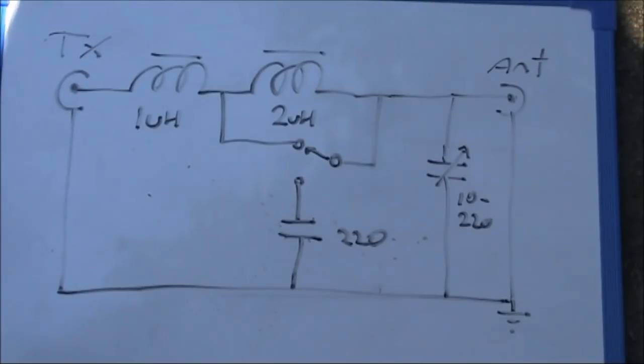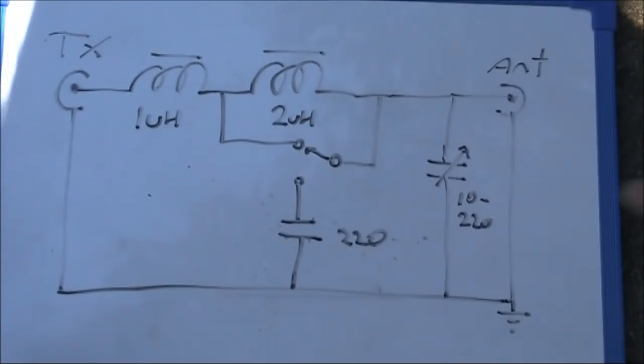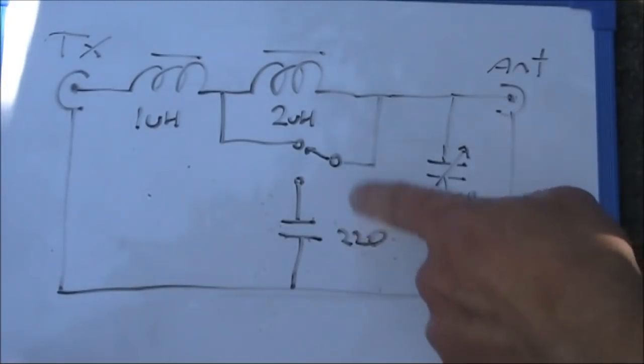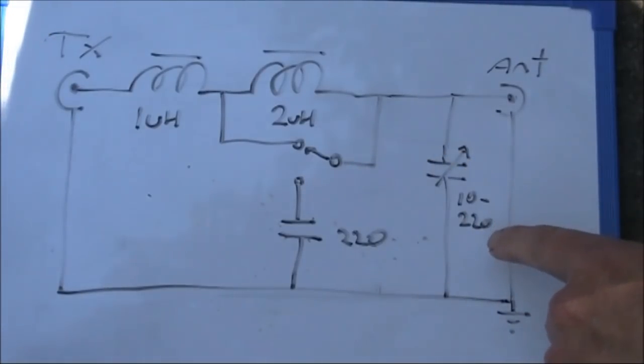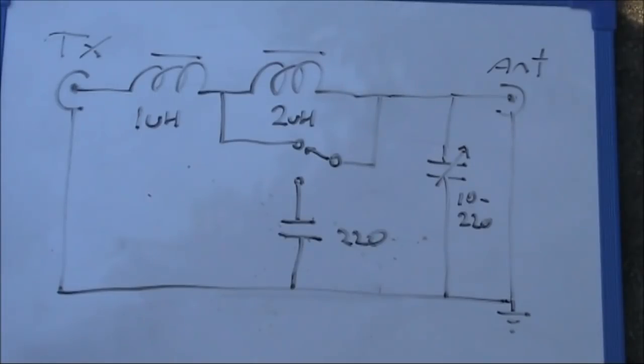Anyway, as you can see from the diagram presented, at the moment the 220 picofarad is switched out, the 2 microhenry is shorted, and you've just got the 10 to 220 picofarad. So, a coupler like this should be okay on the higher HF bands, 14 through to 28 megahertz.